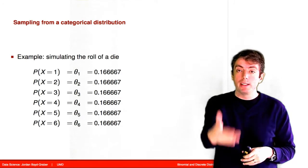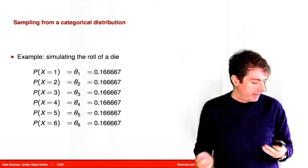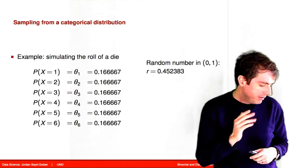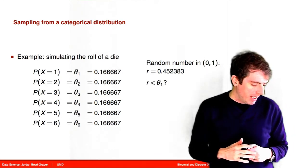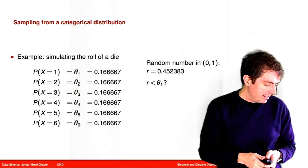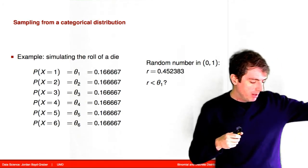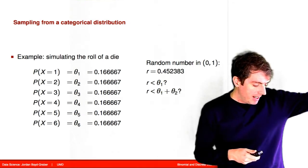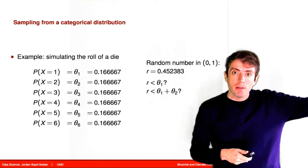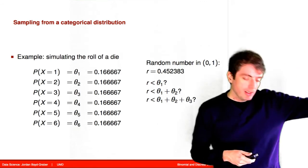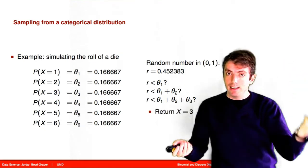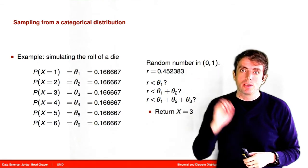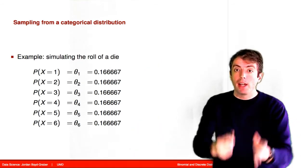Let's say you want to sample from a fair die with six sides and you draw the random number 0.452383. You first check: is that number less than the first theta? It's not. So you add the first two thetas together — is the number less than that? No. You keep going to the next one — is it less than that? Yes. So you return the third index, which corresponds to rolling a three.